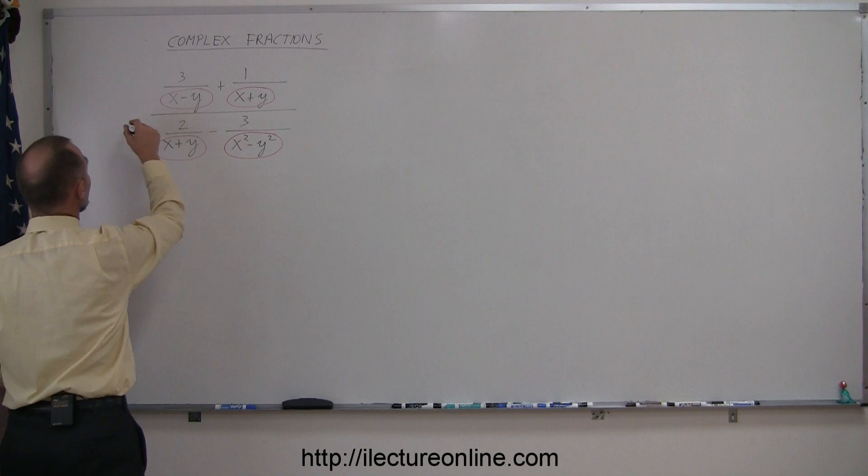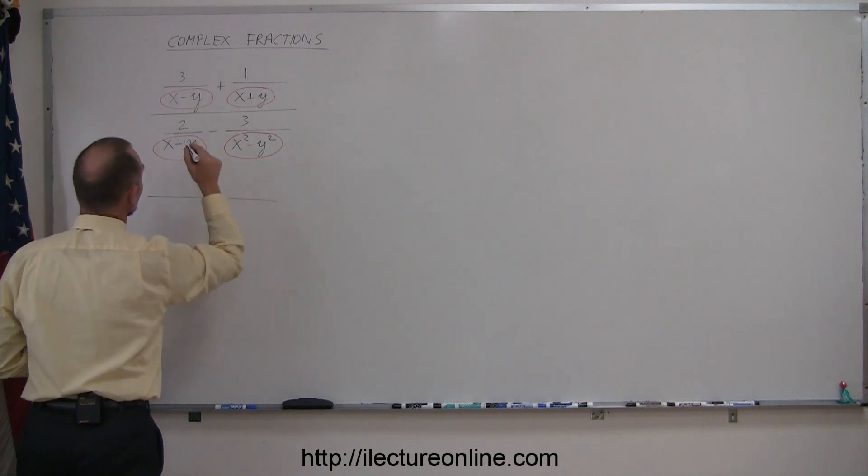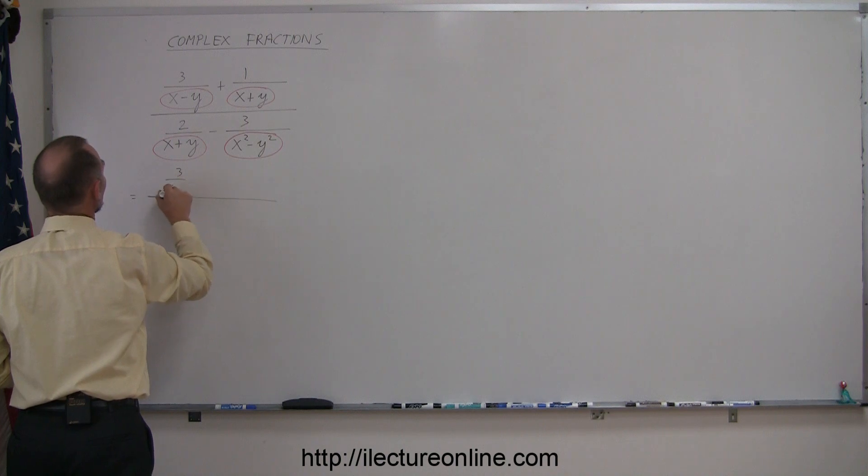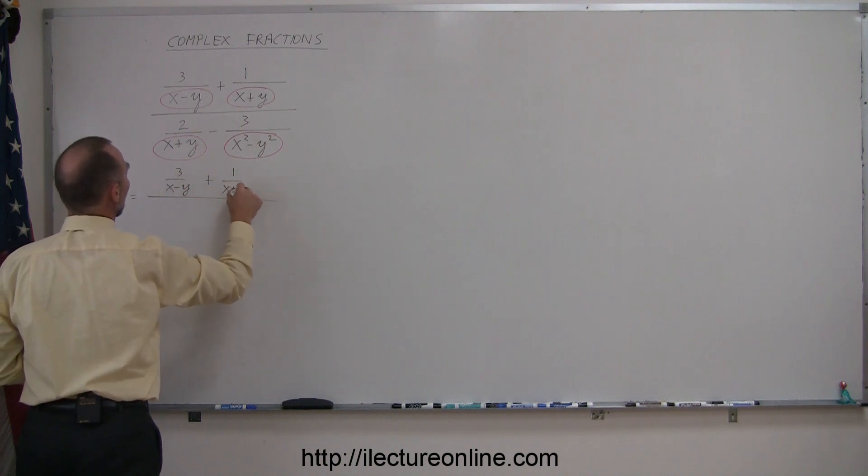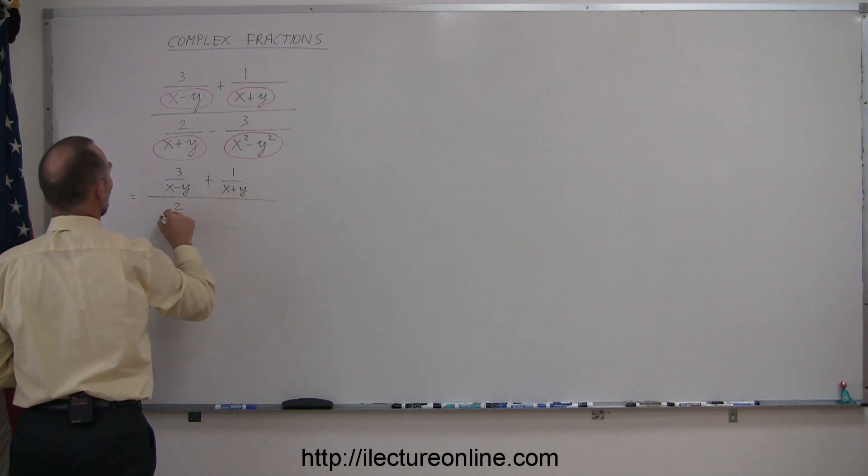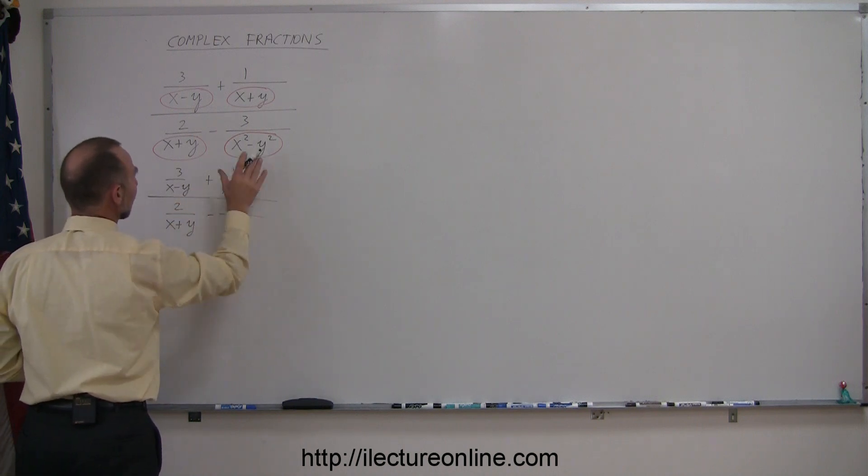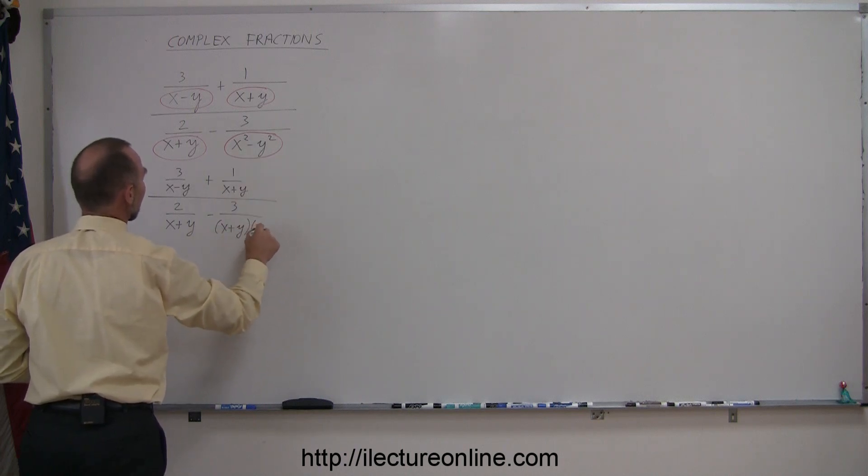Let's go ahead and rewrite this fraction then, so this is equal to: here we have 3 over x minus y, plus 1 over x plus y, divided by 2 over x plus y, and minus 3 over, when I factor this it becomes x plus y, times x minus y.